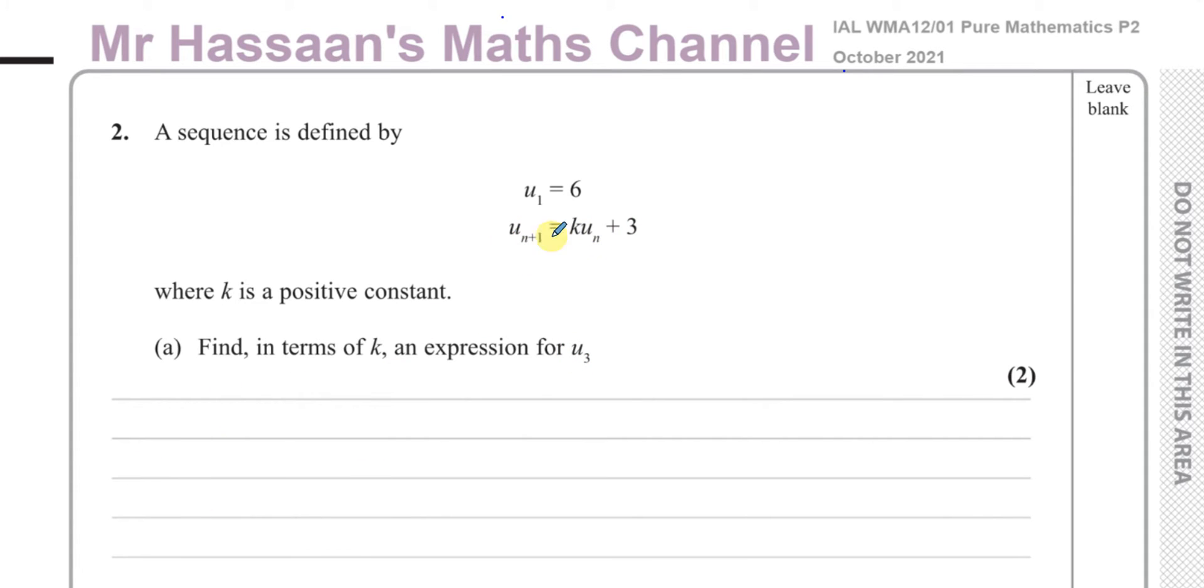So if we take this recurrence relationship, U(n+1) equals K*Un plus 3, then I know U1 equals 6, so I can find what U2 is. The second term is K times the term before it, which is the first term, plus 3.